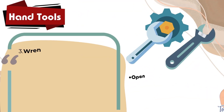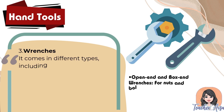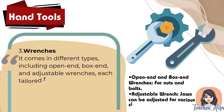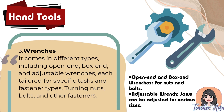Three: wrenches. They come in different types including open end, box end, and adjustable wrenches, each tailored for specific tasks and fastener types — turning nuts, bolts, and other fasteners.